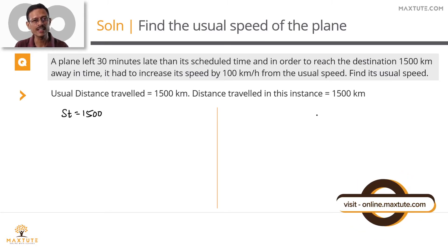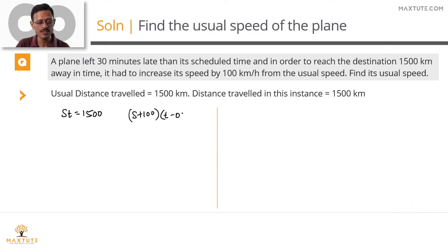In this instance, also it covered the same 1500 kilometers. So what is the equation panning out to? The speed in this instance is equal to s plus 100. Time taken is equal to t minus 0.5. This should be equal to 1500.